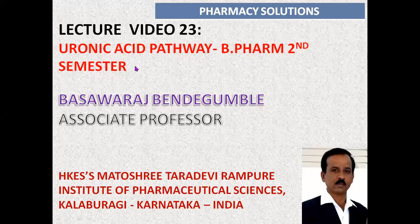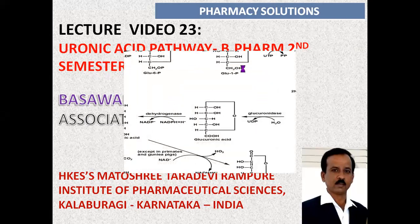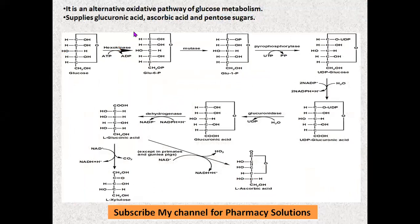Hello friends, this is Basura coming out with a new video on the Uronic Acid Pathway, which is helpful for B.Pharm second semester students. This is also an alternative pathway, like the HMP shunt, for glucose metabolism. The uronic acid pathway is an alternative oxidative pathway for glucose metabolism which supplies glucuronic acid, ascorbic acid, and pentosugars.